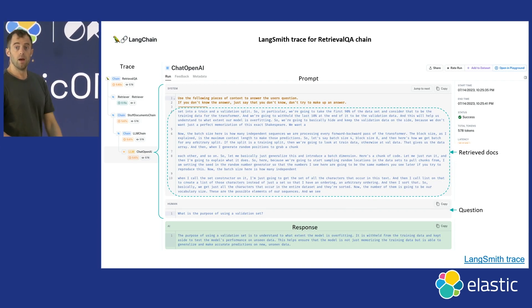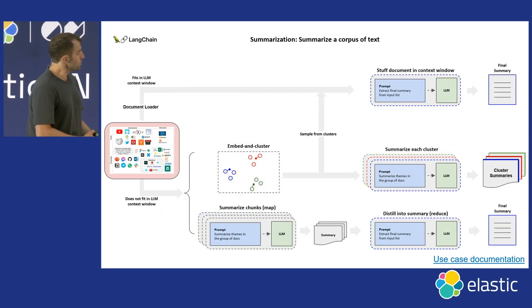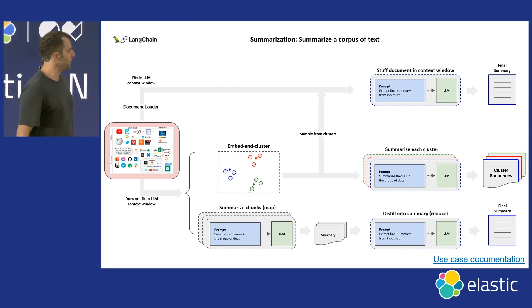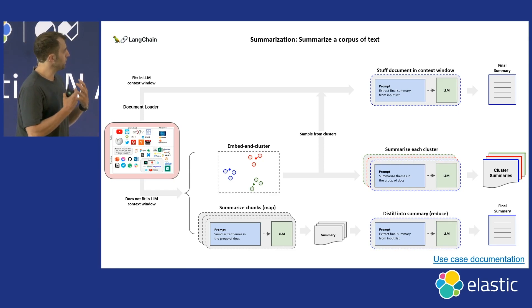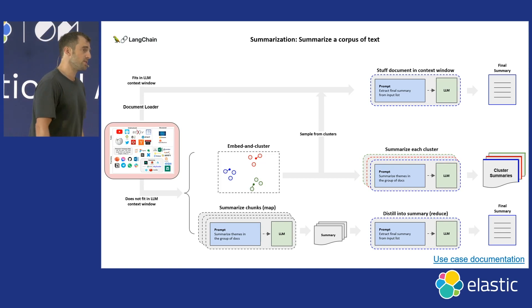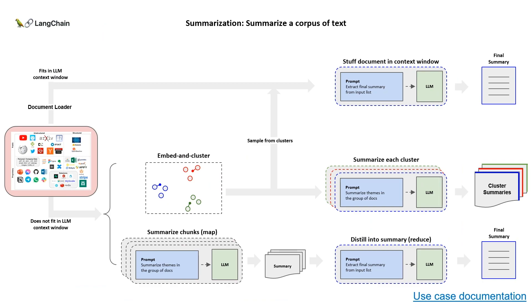Another use case is summarization. We get hundreds of thousands of user questions per month on our documentation and wanted to summarize them into main themes. There are a few approaches: if the context is small, you can stuff it all into an LLM — Anthropic's 100K token context window fits about a 72-page PDF. For larger data, you can embed each split, cluster them, sample from clusters, and summarize those samples. You can also do map-reduce: summarize each chunk, then summarize the summaries.